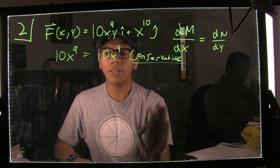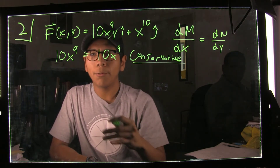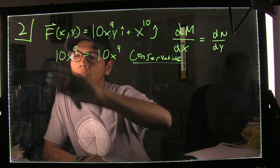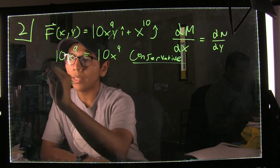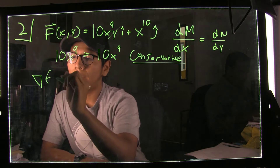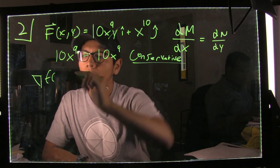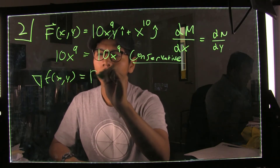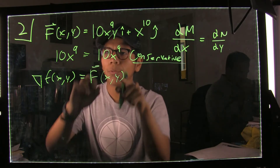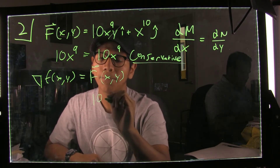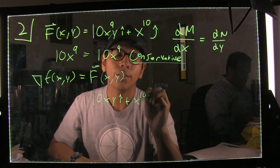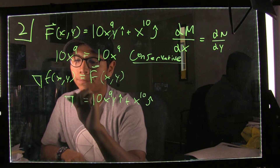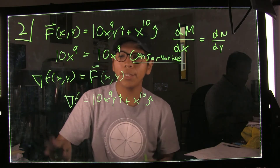Now that we know it's conservative, we've got to find the potential function. The potential function f(x, y) is defined such that its gradient equals the vector field. We know our vector field is 10xy î plus x to the 10th ĵ. Since the gradient of our potential function equals this vector field, we can integrate, essentially taking the gradient in the opposite direction.